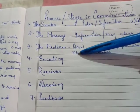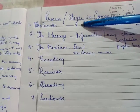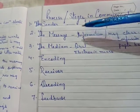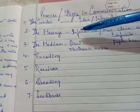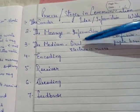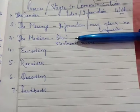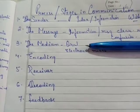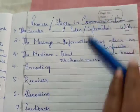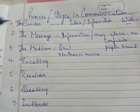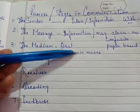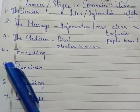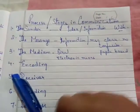Next is medium. The sender is having an idea, information, and a message. Now how the sender will send the message depends upon the medium — specifically the medium chosen by the sender. There are three types of medium by which the sender can send the information. The first is oral.